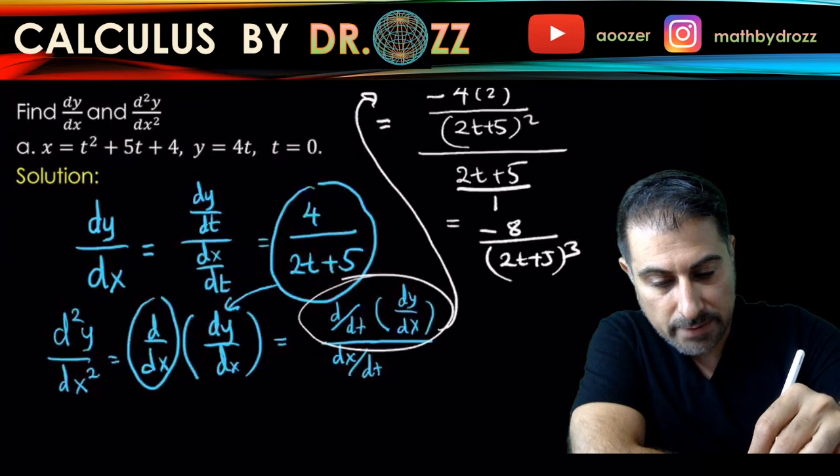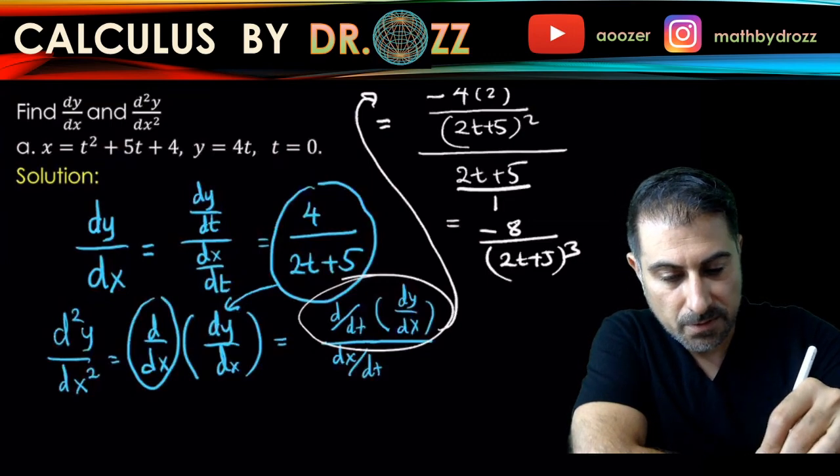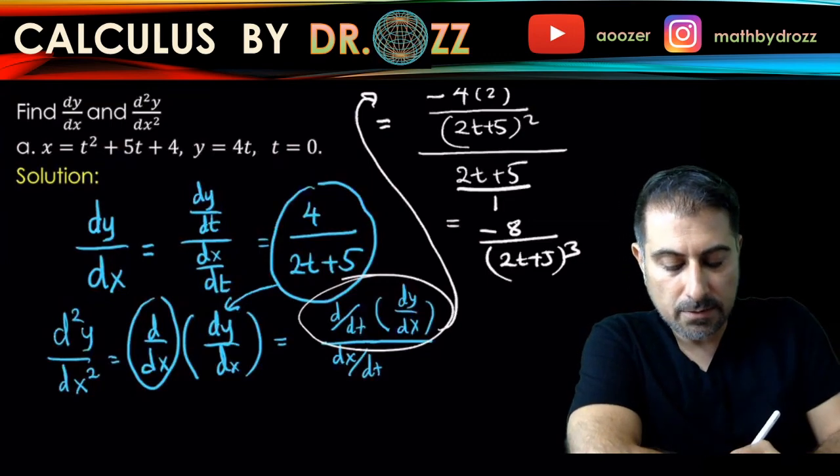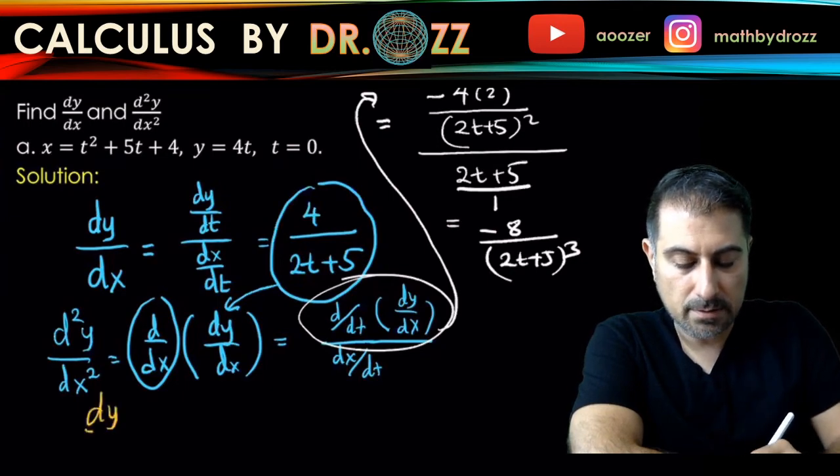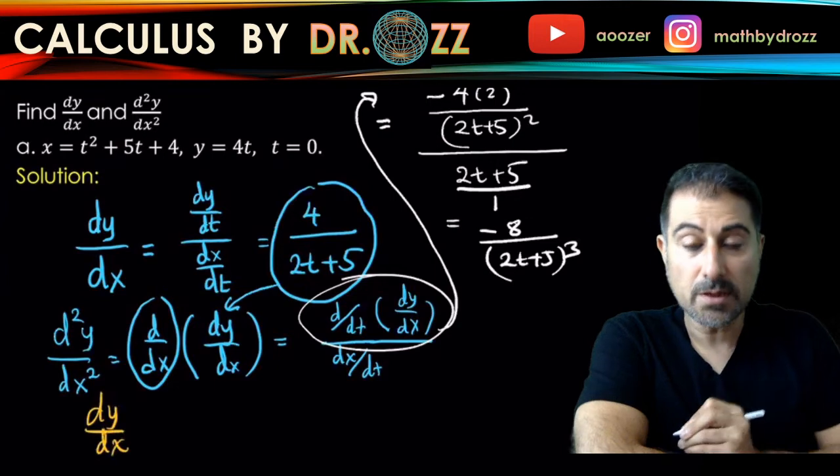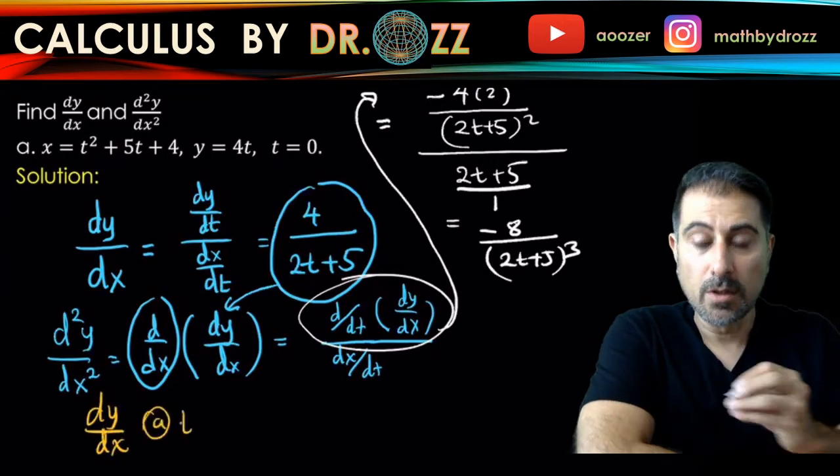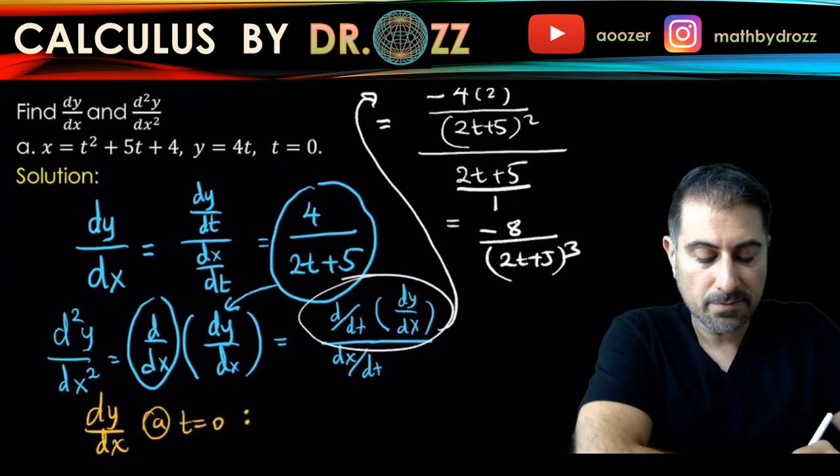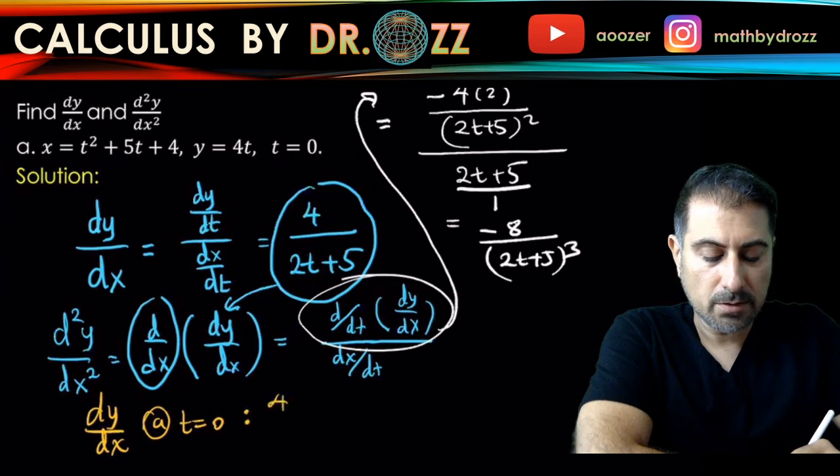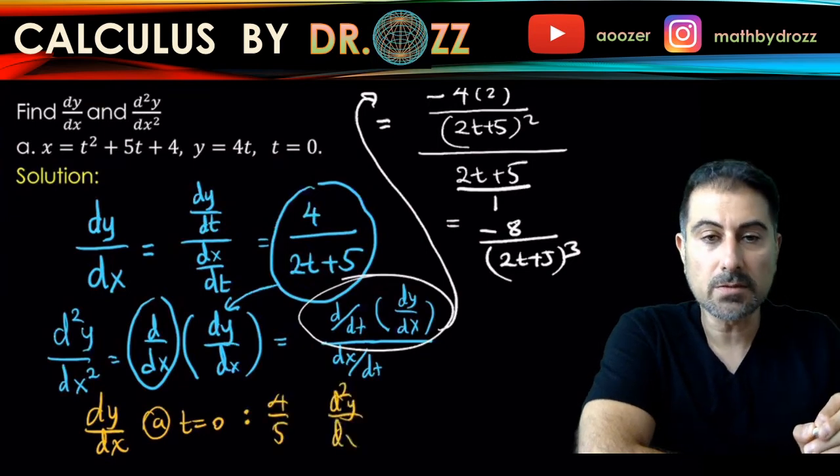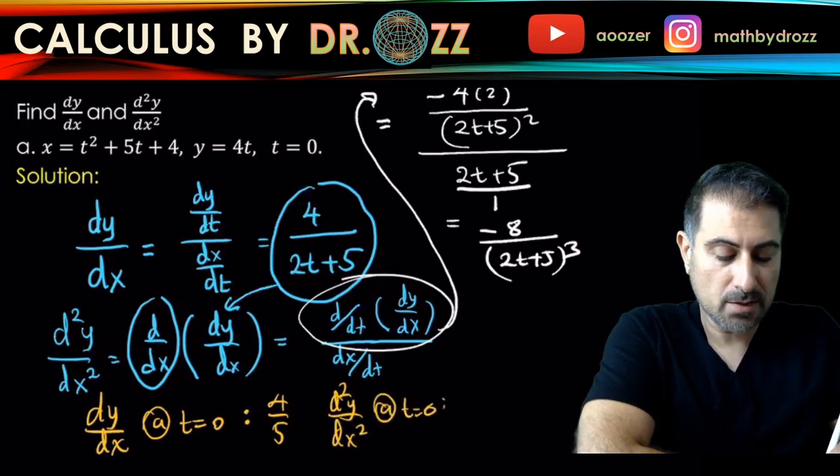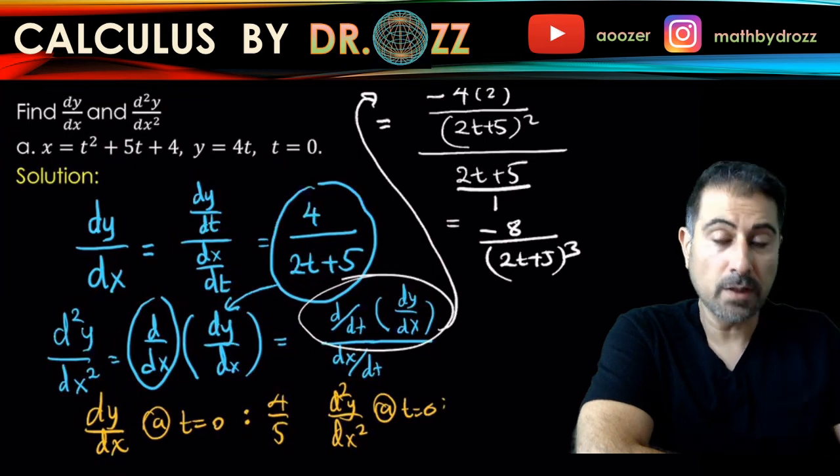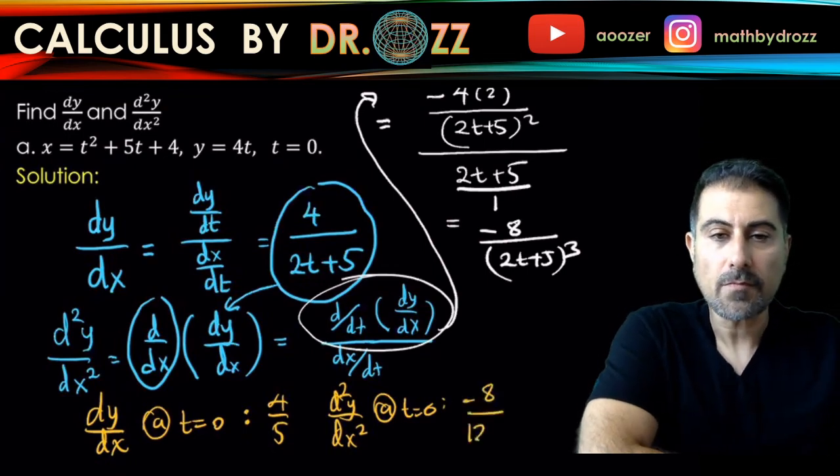Here we go. So dy over dx at t equals 0 is equal to 4 over 5 and d squared y over dx squared at t equals 0 is negative 8 over 5 cubed, which is minus 8 over 125.